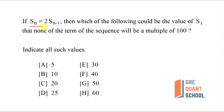If S(n) equals 2 into S(n-1), that means each term of the sequence is double the previous term. Then which of the following options could be the value of S1, the value of the first term, such that none of the terms of the sequence will be a multiple of 100?